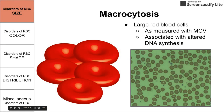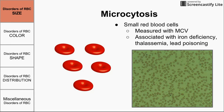First we have macrocytosis, which means large red blood cells. We measure red blood cell size with a lab test called mean corpuscular volume, MCV for short. When the MCV is above about 100, we say we have macrocytosis. This is usually indicative of a disease where DNA synthesis is altered, such as B12 deficiency and folate deficiency. Both molecules are involved in replicating DNA or cell division, so the cells keep growing and never divide — that's why we see large red blood cells.